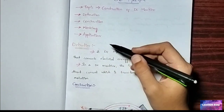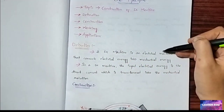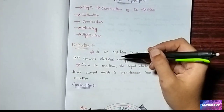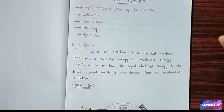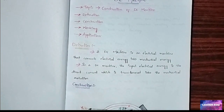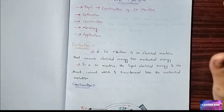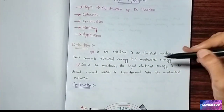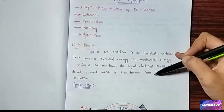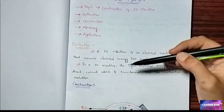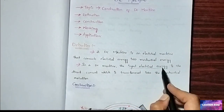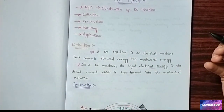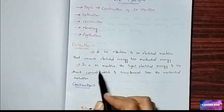First of all, what is the definition of a DC machine? A DC machine is an electrical machine that converts electrical energy into mechanical energy. Generally, a machine is a device which converts electrical energy — either supplied or generated — into mechanical energy. In a DC machine, the input electrical energy is direct current, which is transformed into mechanical rotation.